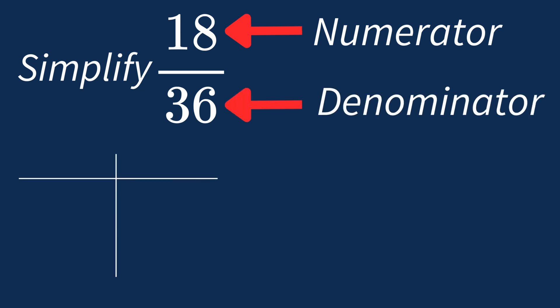First, let's list out the factors for each. For 18, the factors are 1, 2, 3, 6, 9, and 18.